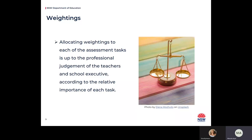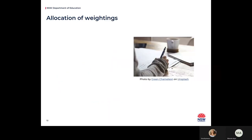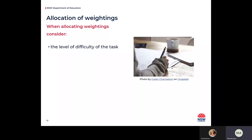If you opt for weightings in Stages 4 and 5, allocating weightings to each of the assessment tasks is up to the professional judgement of the teachers and school executive according to the relative importance of each task. Take a balanced approach if you opt for weightings. It's worth pointing out that for Stage 6, individual tasks would not normally be worth less than 10%, nor more than 40% of the total weighting, and the total number of tasks is capped at 3 in Year 11 and 4 in Year 12. When deciding on the weightings, consider the level of difficulty and whether the task justifies the weighting.